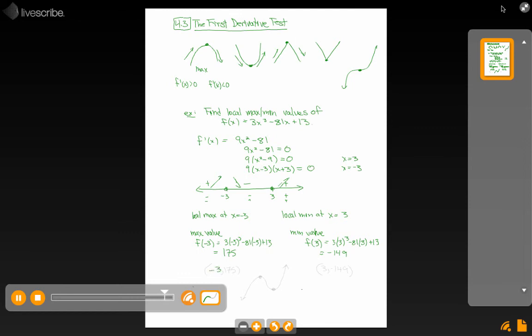Looking at points on the graph, negative 3 comma 175 is a point on the graph and 3 comma negative 149. Hopefully you would agree with a picture that you'd have of a cubic function in your mind. You'd have a maximum value, a minimum value, at local max, local min at those two spots.